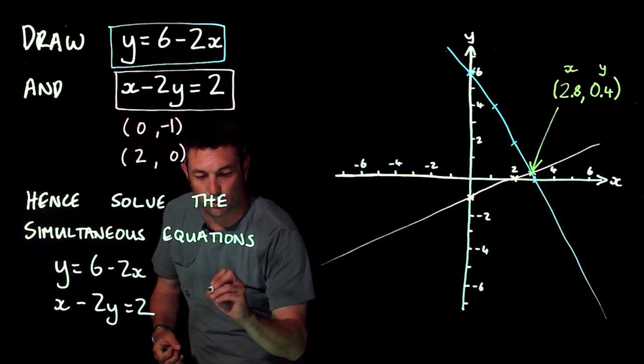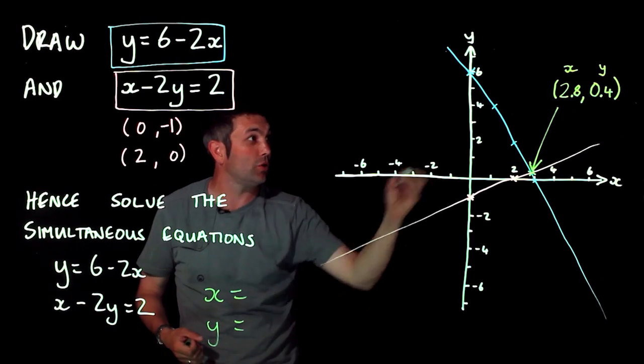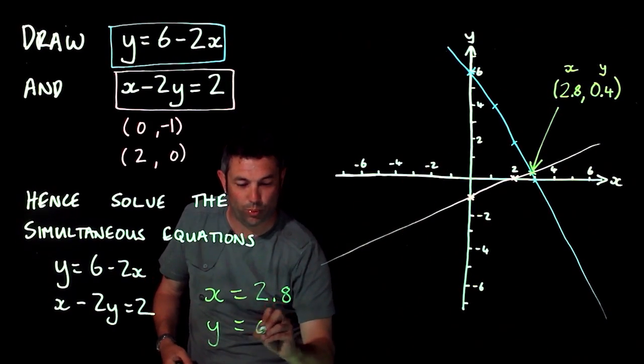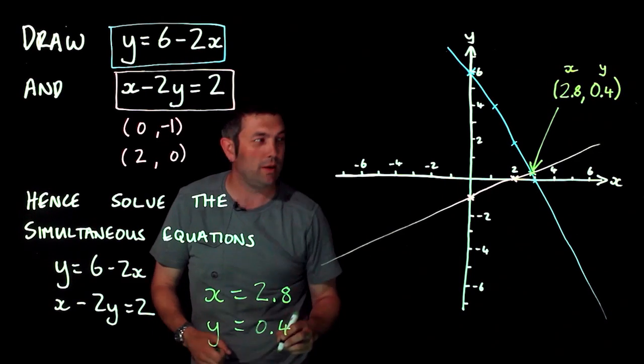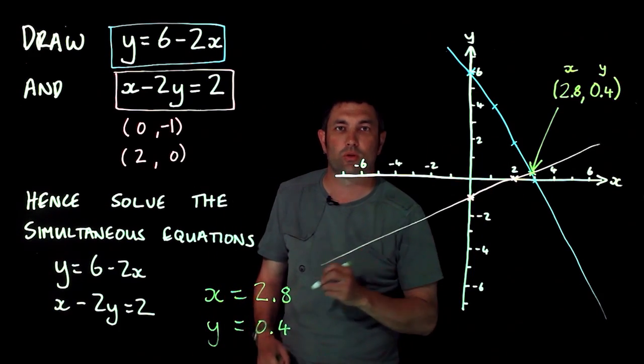So this is x and this is y. And you might be asked to put they might have x equals dot dot dot, y equals dot dot dot, so you put 2.8 there and you put 0.4 for y. So simultaneous equation solution is where the two graphs cross.